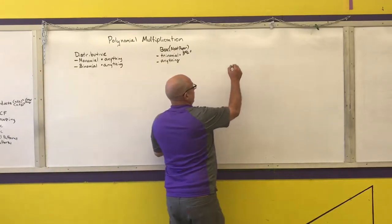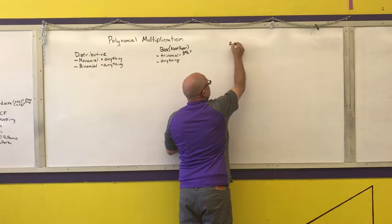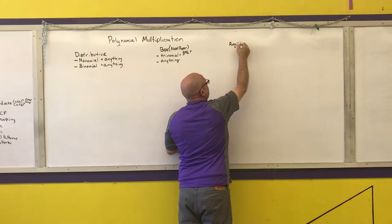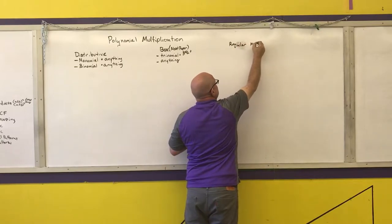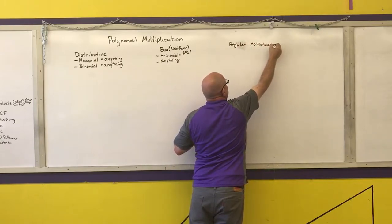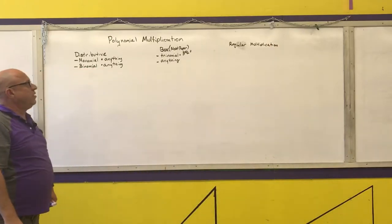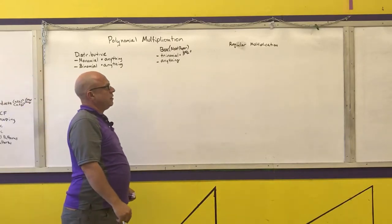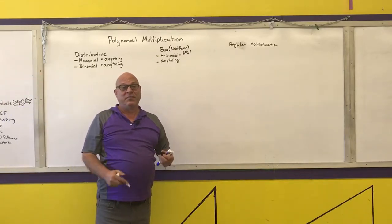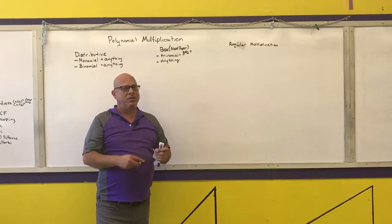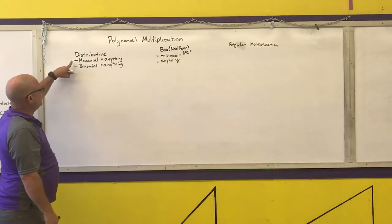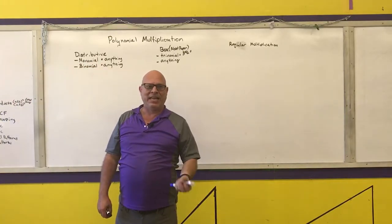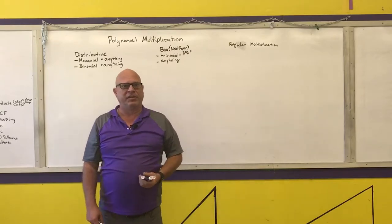My preference is regular multiplication. Regular multiplication is what I recommend — it's the recommended method for every single polynomial multiplication, with the exception of a simple monomial times anything, or a binomial times a binomial. I'll show you the special case for that at the end.